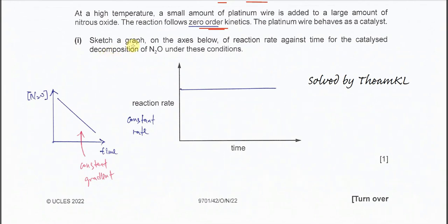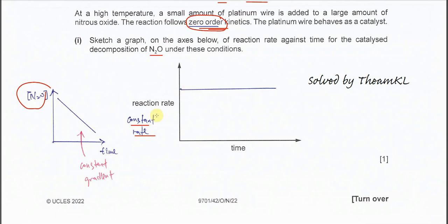Part B1: sketch a graph of reaction rate against time for the catalyzed decomposition of N₂O. This reaction is zero order. You must know the difference between the graphs. For rate versus time in zero order kinetics, the rate is constant over time, so you just draw one horizontal straight line, showing constant reaction rate over time.